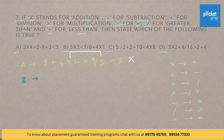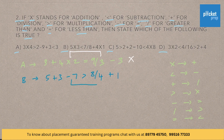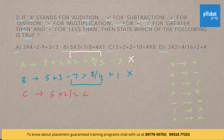Now comes B: 5 plus 3 minus 7 greater than 8 divided by 4 plus 1. Here LHS is not greater than RHS. So even option B is wrong. Now let us check for option C: 5 into 2 divided by 2 less than 10 minus 4 plus 8. So option C is the right answer.